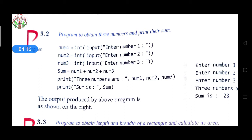First we declare a variable num1 — number one — equal to int, because we want integer type numbers. We use the input function: 'Enter number one'. Similarly, num2 equal to int(input('Enter number two')) and num3 equal to int(input('Enter number three')). We take three variables because the question asks to obtain three numbers and print their sum.